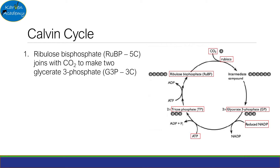Firstly, ribulose bisphosphate — RuBP for short — is a 5-carbon compound, which joins with carbon dioxide to make 2-glycerate-3-phosphate, which is a 3-carbon compound. This reaction is catalyzed by the enzyme Rubisco.